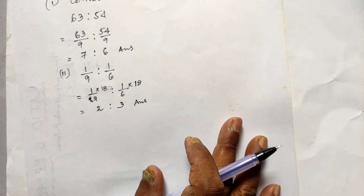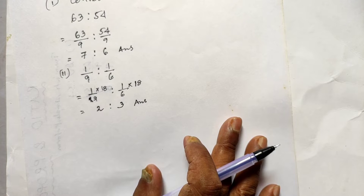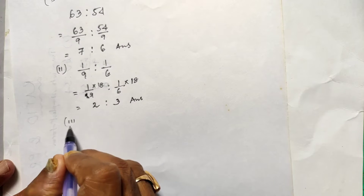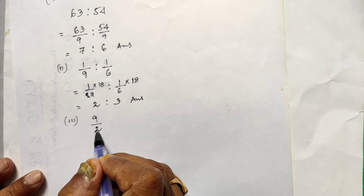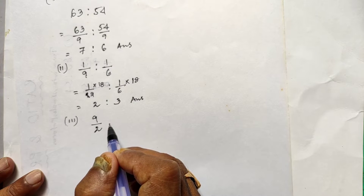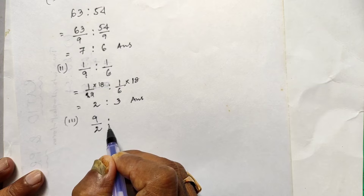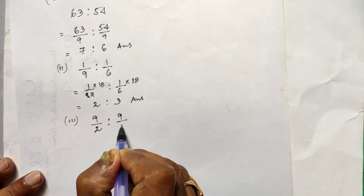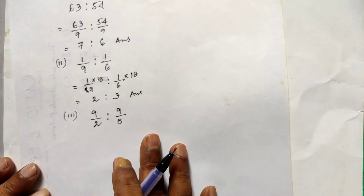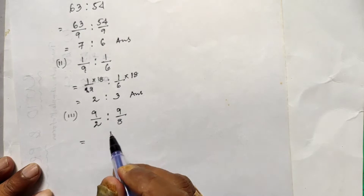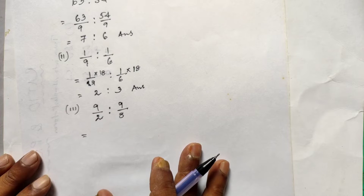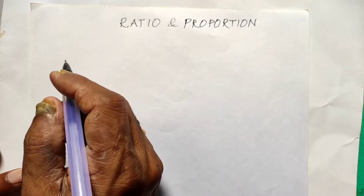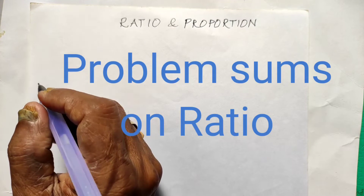Another example involves a fraction sum with 9/2. You need to have strong knowledge of fractions. Find the LCM — in this case it is 8 — and then divide accordingly.